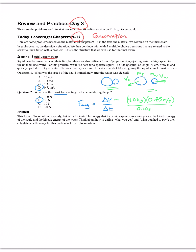Next, we're thinking about energy and the efficiency of this locomotion. Efficiency is generally what you get divided by what you had to pay, in energetic terms. What the squid gets is motion — the kinetic energy of the squid. What it has to pay is all the energy put into the system: the kinetic energy of the squid plus the kinetic energy of the water. Putting in the numbers, I end up with an efficiency of about 0.070 — that's about 7% efficient.